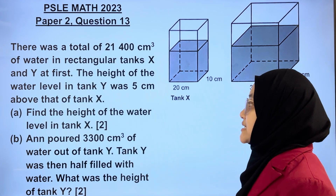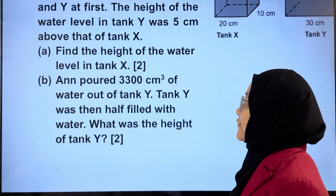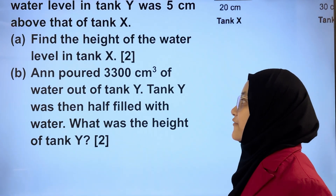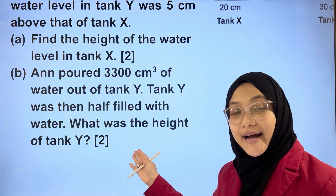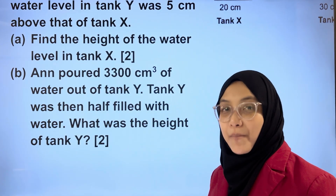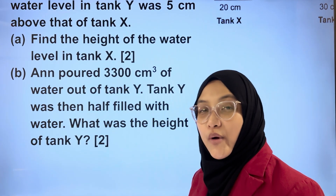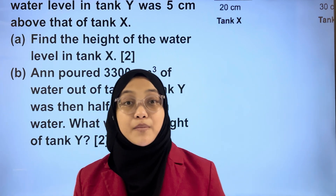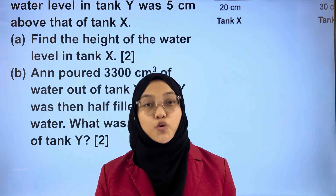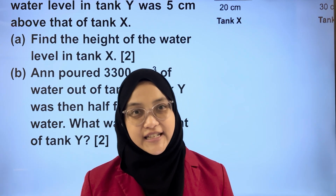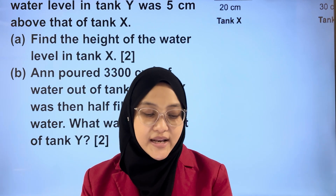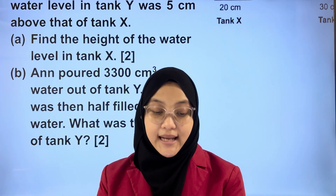Students, even though this is a 4-mark question, it is divided into 2 parts, whereby each part is 2 marks. What does this mean? That means this question is doable. So let's solve this confidently.